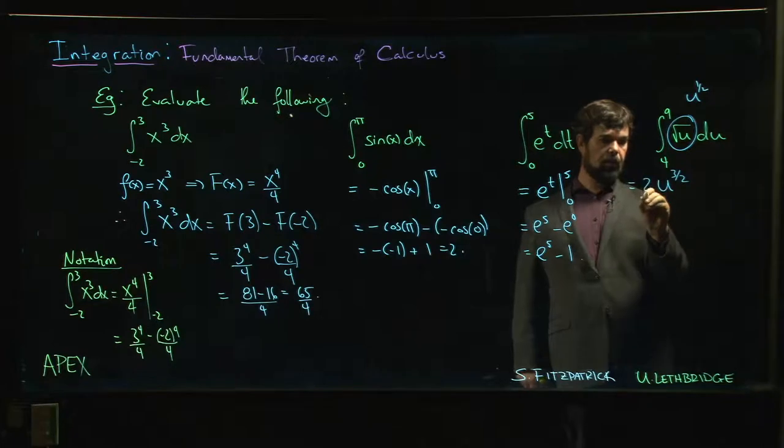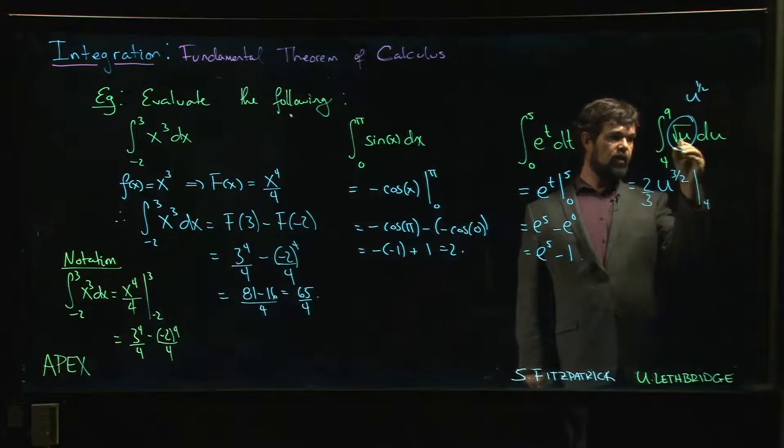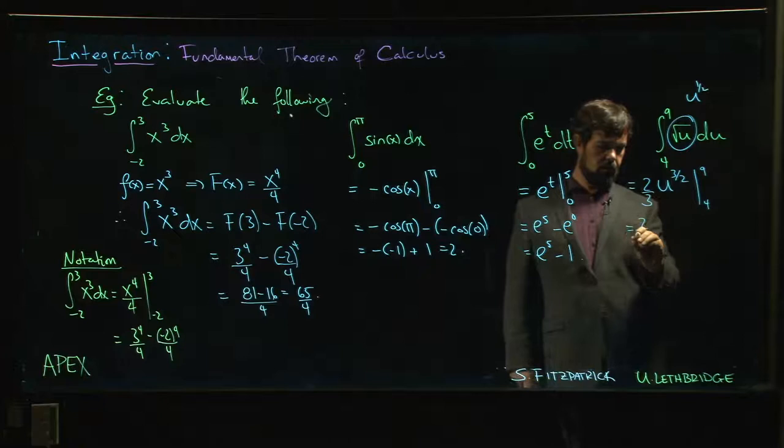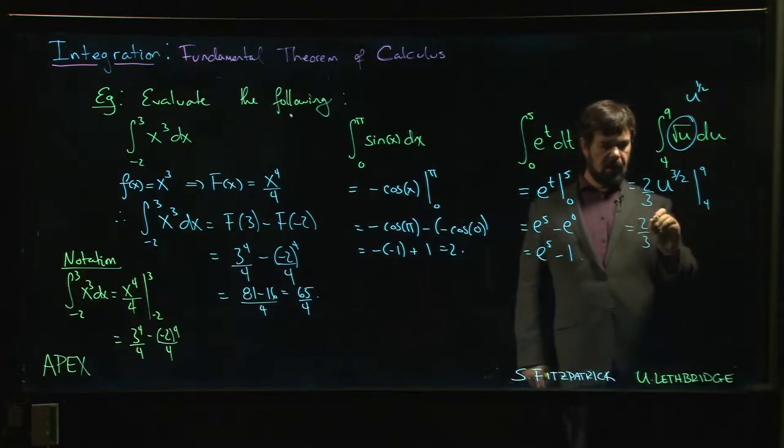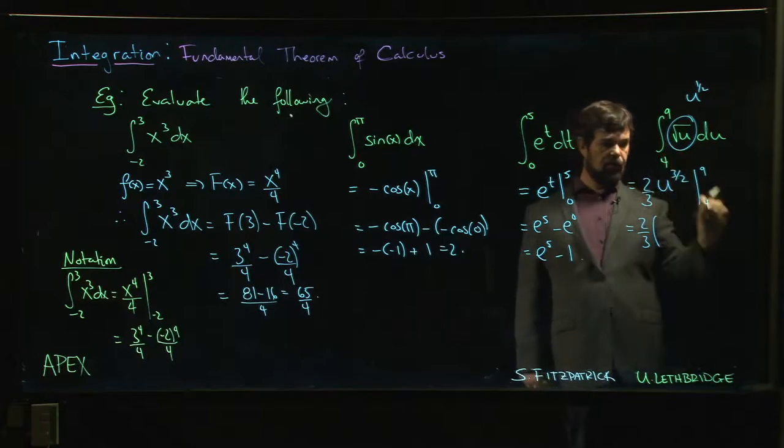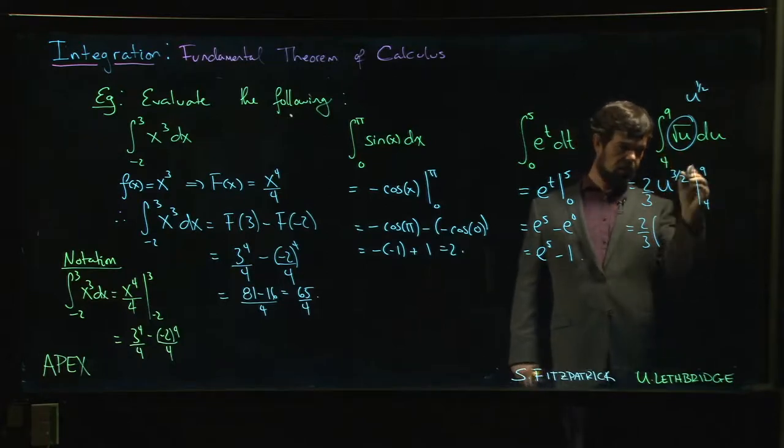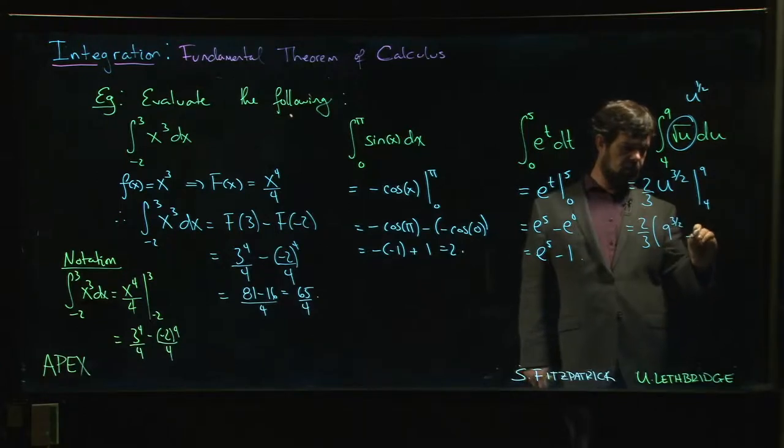I need to divide by three halves. Dividing by three halves is the same thing as multiplying by the reciprocal, so two-thirds. Okay, so you have to think a little bit about the antiderivative for that one. Once you do, it's not so bad. Keep in mind that that constant out front is going to apply to both. It's two-thirds times nine to the three over two minus two-thirds times four to the three over two.